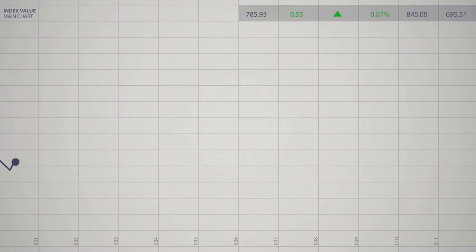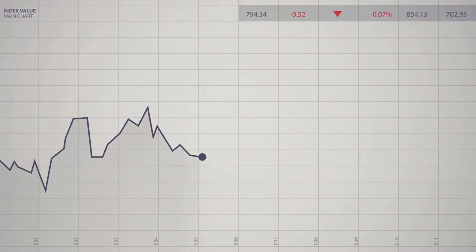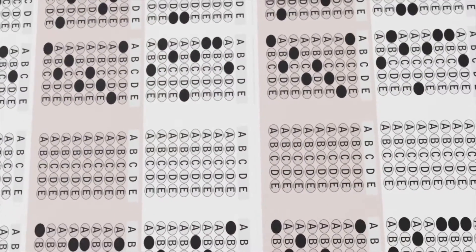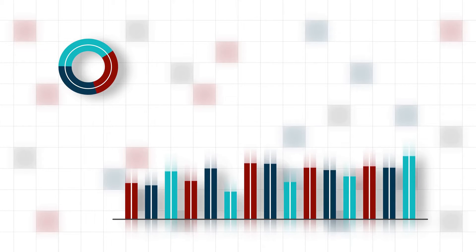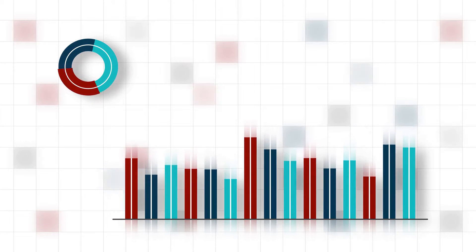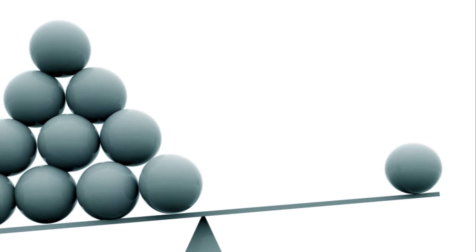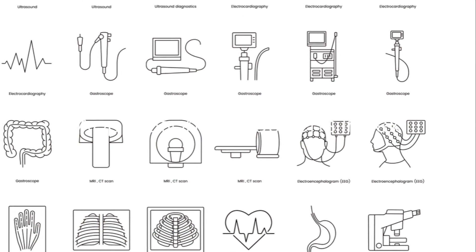The beauty of Youden's Index lies in its ability to consider both sensitivity and specificity simultaneously, providing a balanced view of test performance. This balance is crucial. Imagine a test with high sensitivity but low specificity — it would identify most true positives but also incorrectly flag many negatives. The reverse, a test with high specificity but low sensitivity, would correctly identify most negatives but miss many positives.